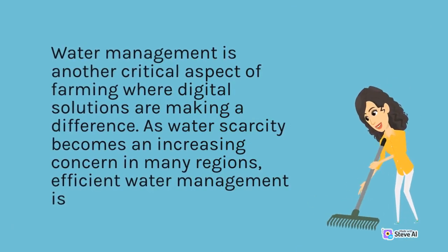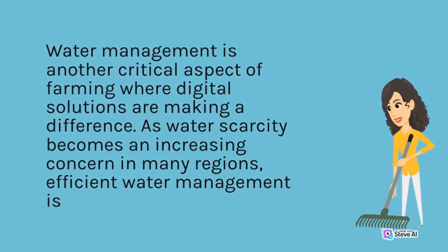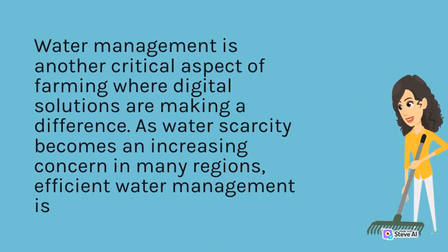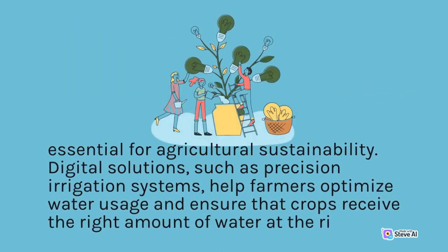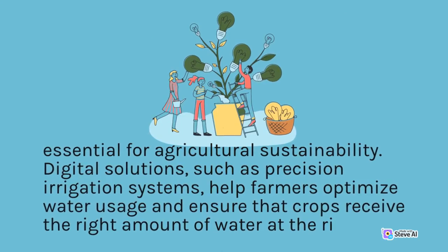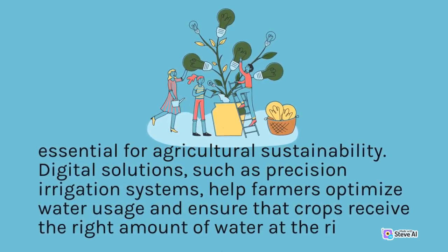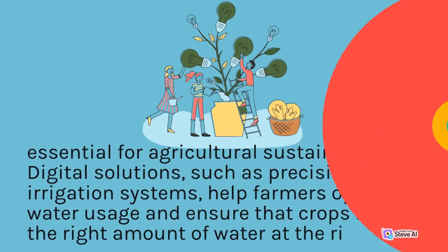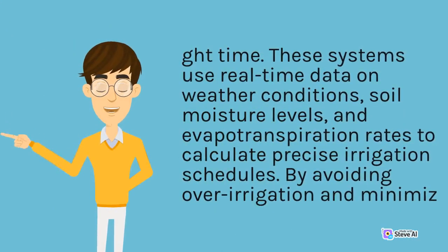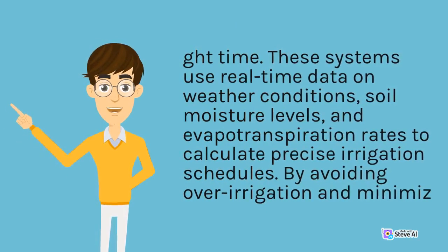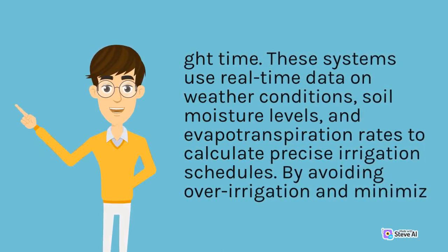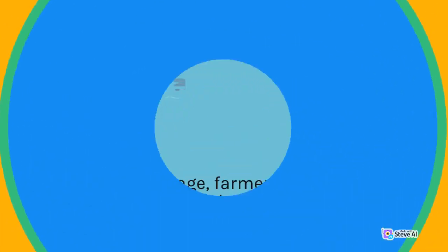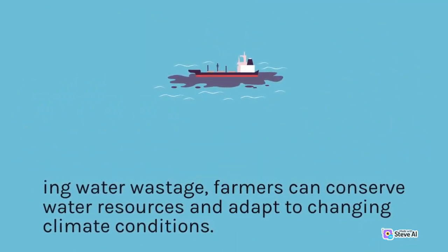Water management is another critical aspect of farming where digital solutions are making a difference. As water scarcity becomes an increasing concern in many regions, efficient water management is essential for agricultural sustainability. Digital solutions, such as precision irrigation systems, help farmers optimize water usage and ensure that crops receive the right amount of water at the right time. These systems use real-time data on weather conditions, soil moisture levels, and evapotranspiration rates to calculate precise irrigation schedules. By avoiding over-irrigation and minimizing water wastage, farmers can conserve water resources and adapt to changing climate conditions.